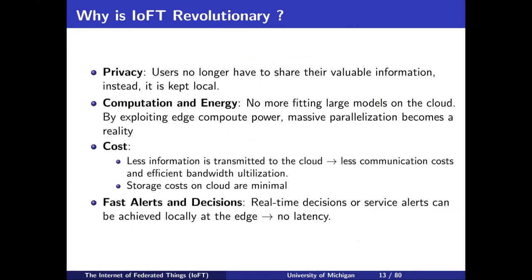So why is this idea interesting? The first reason is privacy. If you are able to do some computations locally, you do not really need to share your entire data — you can just share whatever you learn or summary statistics. This also makes encryption much easier; it's much simpler to encrypt a summary statistic compared to encrypting entire datasets. The second reason is computation and energy — by using compute power at the edge, we can massively parallelize our learning efforts and reduce energy.